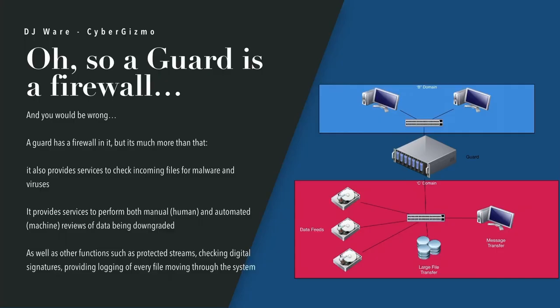A guard also provides services to perform both manual human and automated machine reviews where it can. In my experience, the automated review happens first — if it fails, it goes to a human review. If the person downgrading the file knows it will require a human review, they mark it as such and it bypasses the machine check. There are other functions such as protected streams — you can have multiple streams of data, video for example, coming out that are protected. There are checks for digital signatures and digital handshakes before data is even permitted to move in either direction, plus logging on every file and every operation.